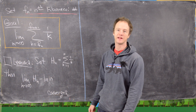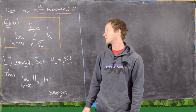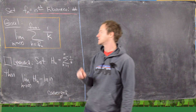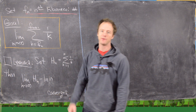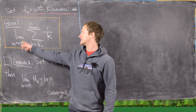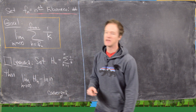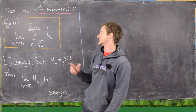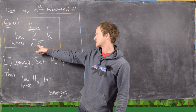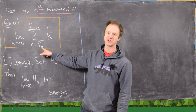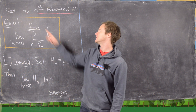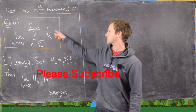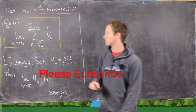In this video we're going to look at a pretty interesting sequence and find its limit. The sequence whose limit we're going to find is the limit as n goes to infinity of this finite sum from the nth Fibonacci number to the n plus first Fibonacci number of 1 over k.